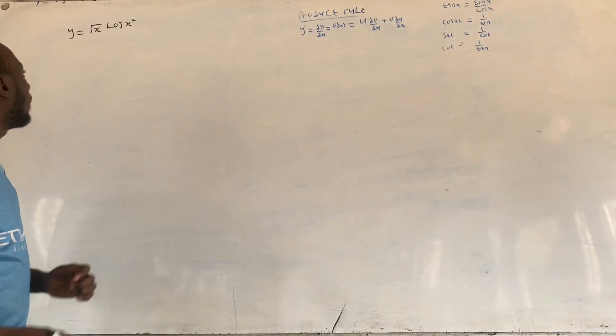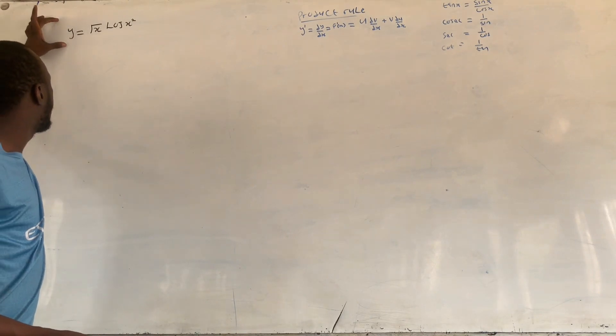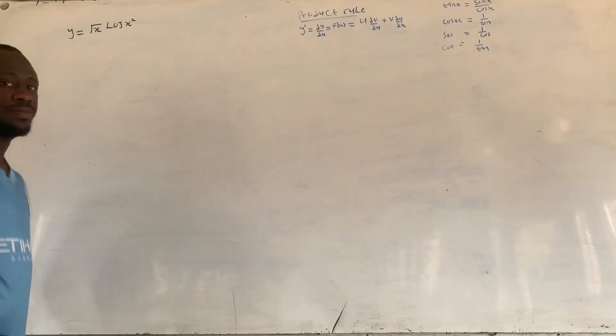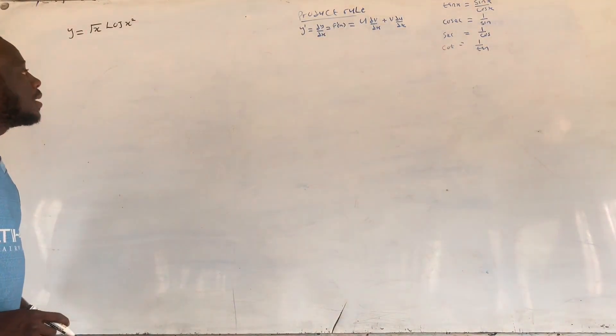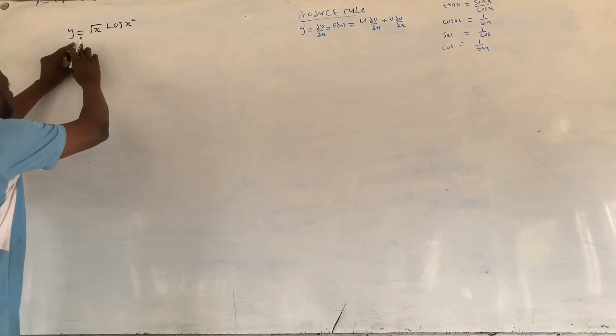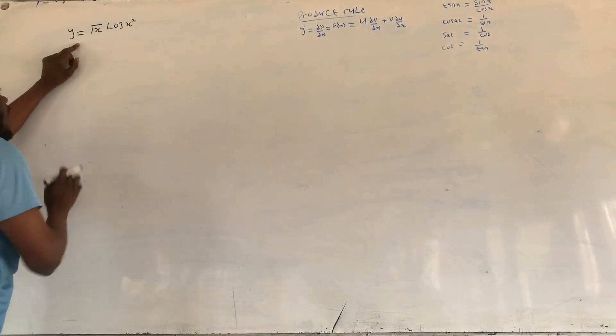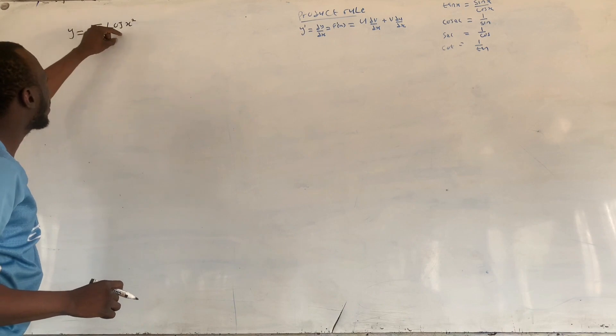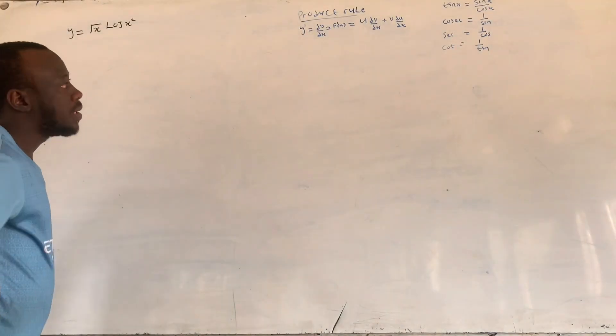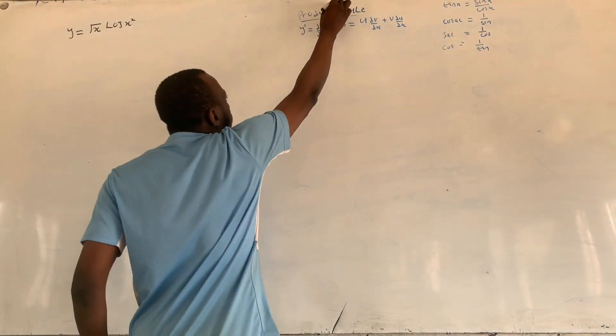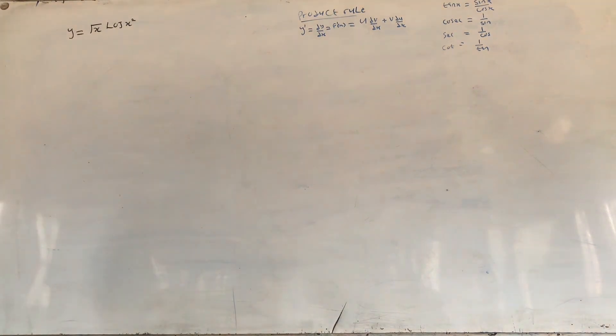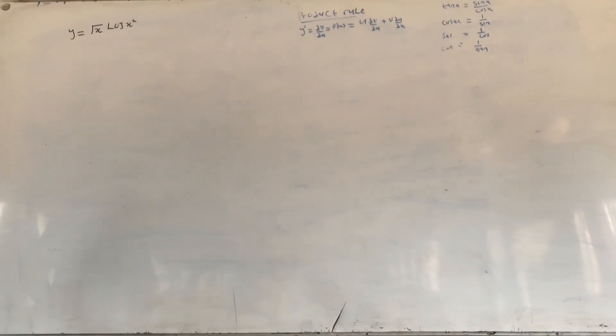So now we are going to differentiate this equation. As we have seen here, this equation y equals root x times log x squared corresponds to product rule. Remember that we said make the first one u.